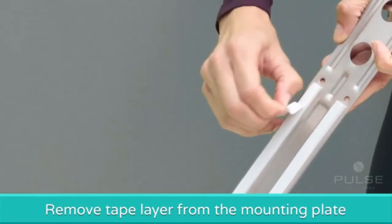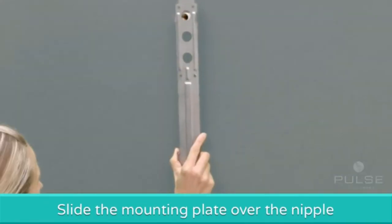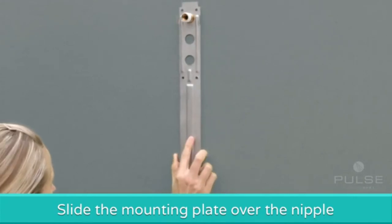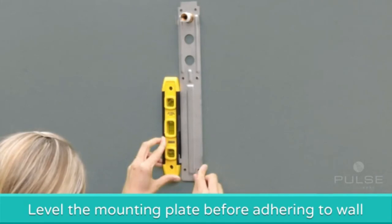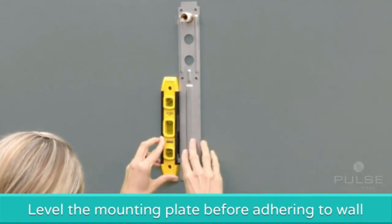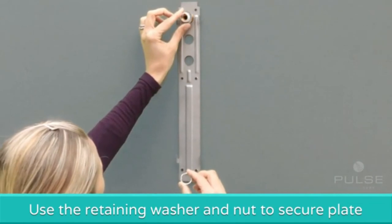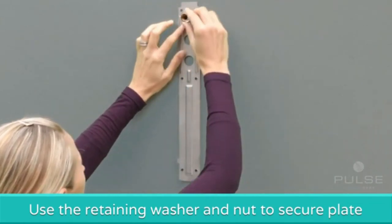Remove the face of the tape layer from the mounting plate and slide the plate over the nipple through predetermined hole A, B or C. Level the mounting plate before adhering to the shower wall. Use the retaining washer and or the nut over the nipple to secure the mounting plate.